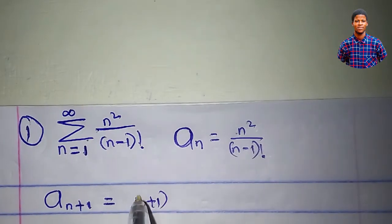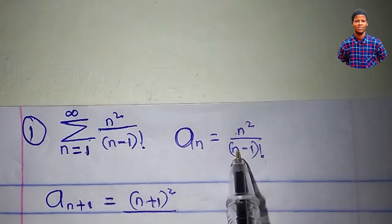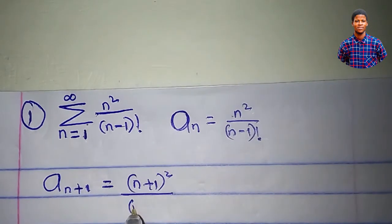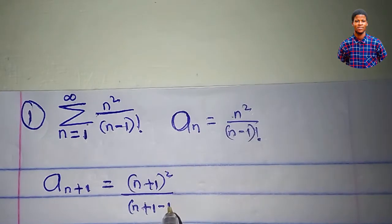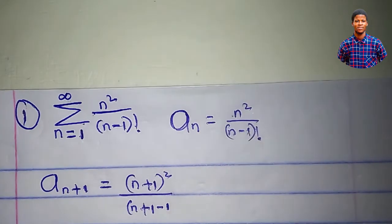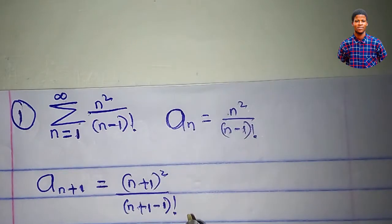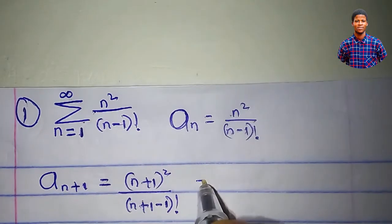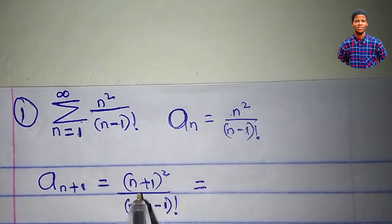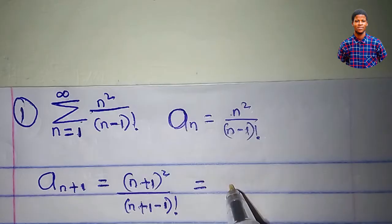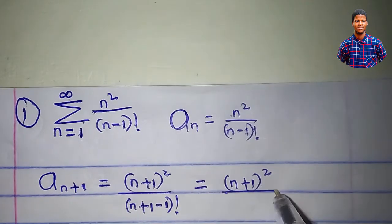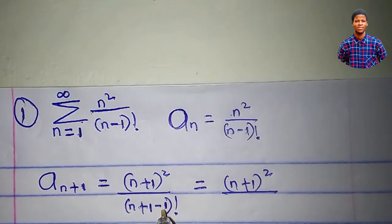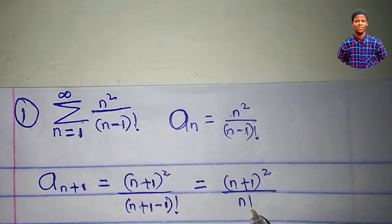So a sub n plus 1 is n plus 1 squared all over n plus 1 minus 1 factorial. Since n plus 1 minus 1 is just n, this simplifies to n plus 1 squared all over n factorial.